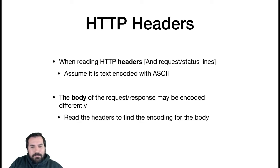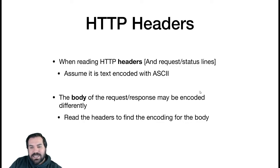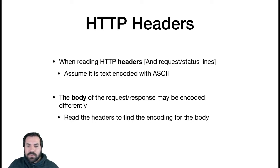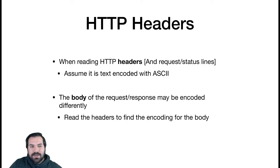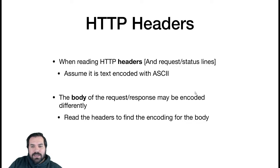You can assume that HTTP headers and the request status line are encoded in ASCII. This is a very powerful and useful assumption. When you get an HTTP request in your server, you can parse the headers by decoding them as ASCII text and read what all the headers say. The headers might then tell you to use a different encoding for the body. But the headers — you can always assume ASCII, and HTTP headers contain ASCII characters only.